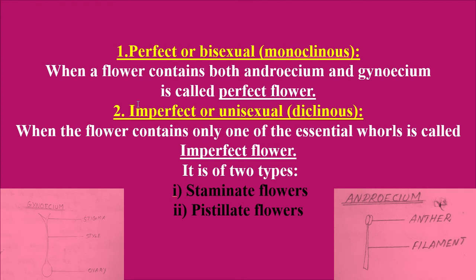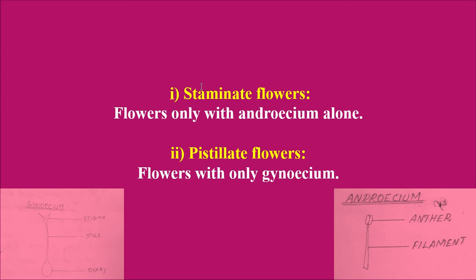The next type is the imperfect flower. When a flower contains only one of the essential organs — that is, either androecium or gynoecium — then those flowers are said to be imperfect flowers. Imperfect or unisexual flowers are of two types: staminate flowers and pistillate flowers. Staminate flowers are flowers that contain only the androecium. If only this part is present in a flower, then that flower is called a staminate flower.